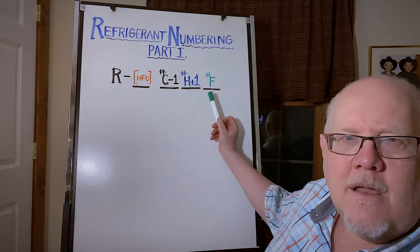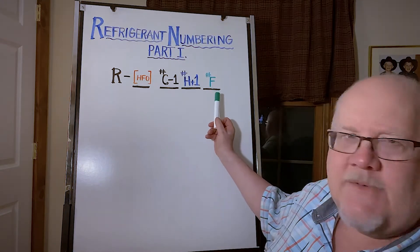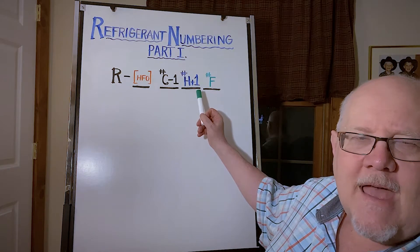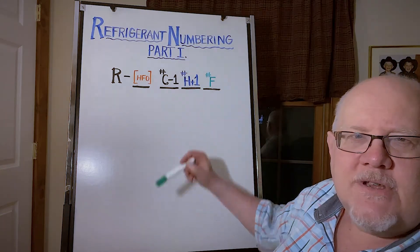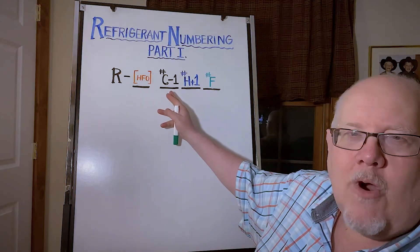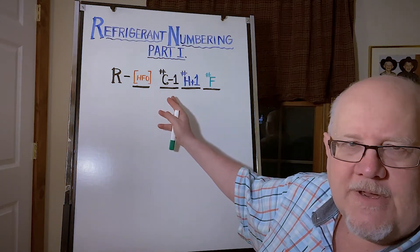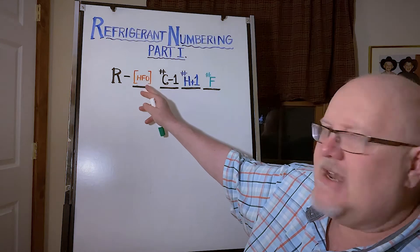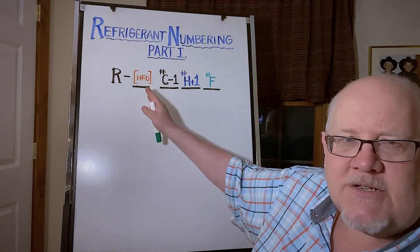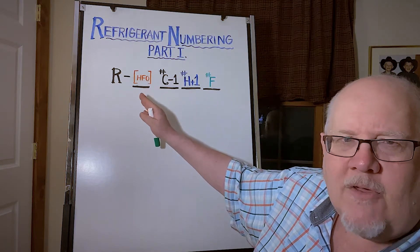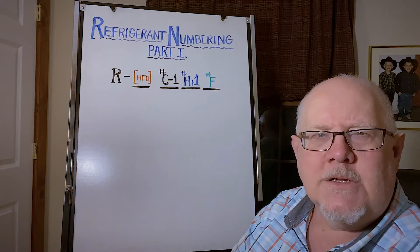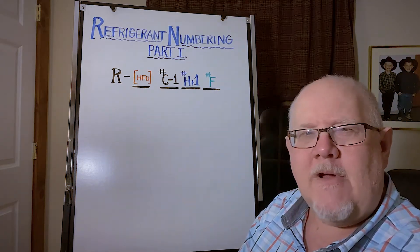So the far right is going to be the number of fluorines. The number next to that, working from right to left, is the number of hydrogen in a molecule plus one. Then we have the number of carbons minus one for the third digit. And then the last digit out here is usually a zero so it doesn't show up, but in the case of an unsaturated olefin or an HFO type molecule, you'll see a one out there in a four digit number.